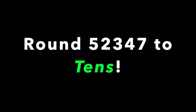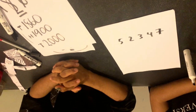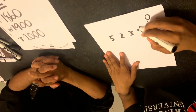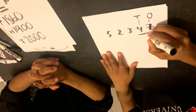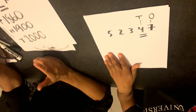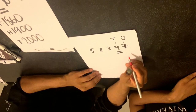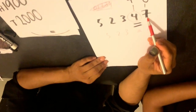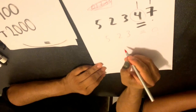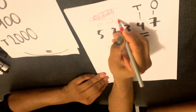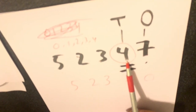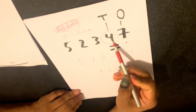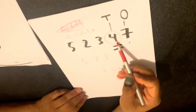Now I'm going to teach you something. 10th place — this is the 1s place, this is the 10th place. I have to round to the 10th place. What is the target? This is the target. If the number next to the target is 0, 1, 2, 3, or 4, then you do not change the target. If it is 5, 6, 7, 8, or 9, then you have to add 1 to the target.